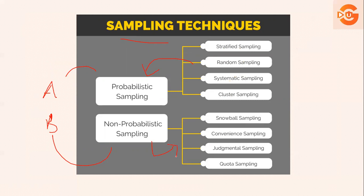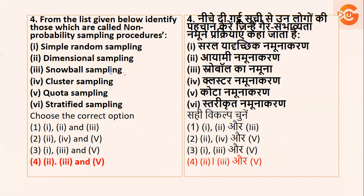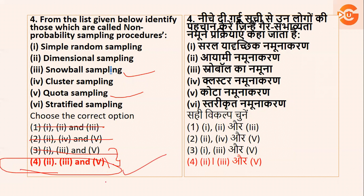Just have a glance quickly. Toh agar hum question peh jaate hai, yahan pe non-probability diya hai, toh humne padha snowball hai, quota hai — we have studied quota sampling. So we have snowball and quota — yeh dono aapko confirm hai, that is three and five. Now, random sampling toh probability mein aata hai, non-probability mein nahi. Toh woh option cancel ho gaya. So right answer is option number four. Yeh easy method hai — downsizing method. Aapko bohut convenient hota hai and it takes less time.